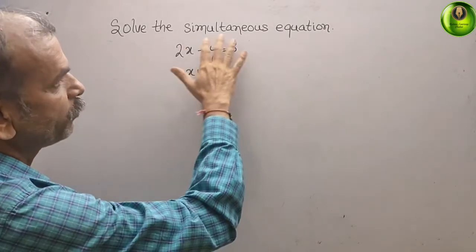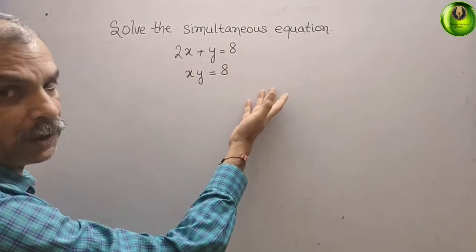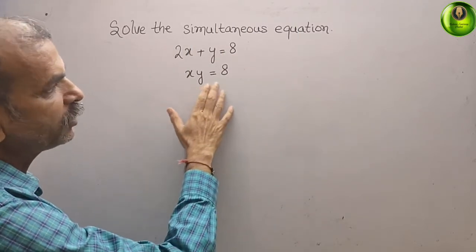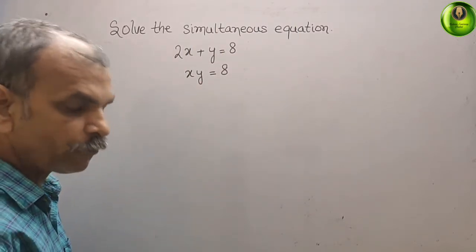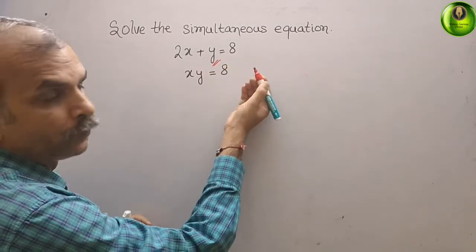Your question is solve the simultaneous equation. What they have given: 2x plus y is equal to 8, and x times y is equal to 8. Now from the first equation we will find out y.